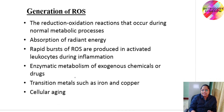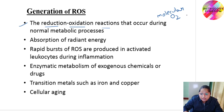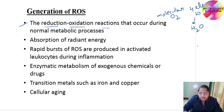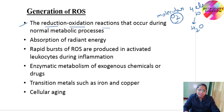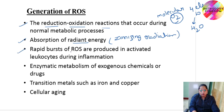Coming on to the generation of reactive oxygen species — how they are generated. The various examples include reduction and oxidation reactions that occur during normal metabolic processes. In normal respiration, molecular oxygen is reduced by transfer of four electrons to hydrogen to form water, but sometimes oxygen is partially reduced, leading to the formation of reactive oxygen species. The second example is absorption of radiant energy, such as ionizing radiation, which leads to the formation of reactive oxygen species.